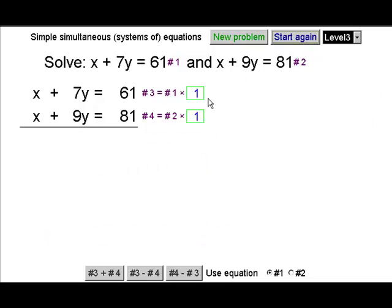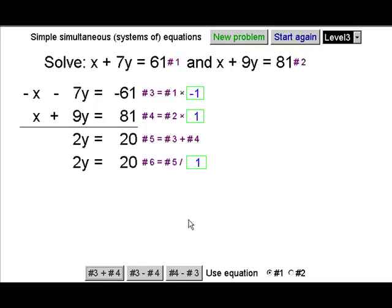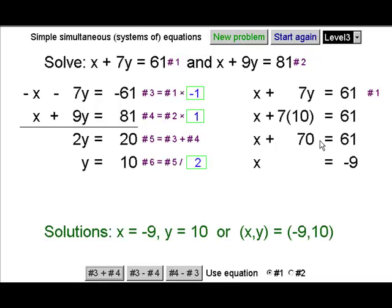Or else we can multiply either of these equations through by minus one, negative one and see what happens when we add the two equations. Let's take the top one this time, multiply through that by minus one, now add the two equations and once again we've got to a situation we've seen before and we can solve the whole problem.